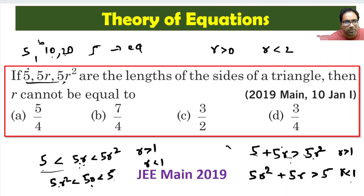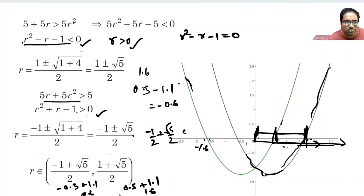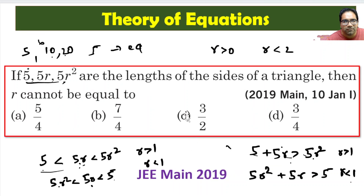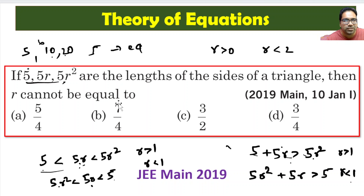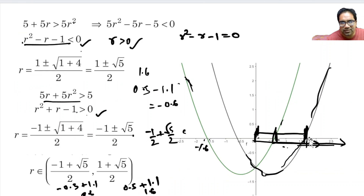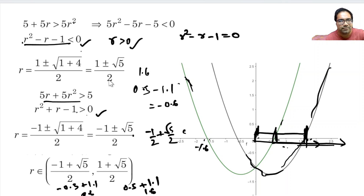Looking at the answer options: 5/4 = 1.25 is within the range, 7/4 = 1.75 is outside our range of 0.6 to 1.6, 3/2 = 1.5 is within the range, and 3/4 = 0.75 is also within the range. So r cannot be equal to 7/4. We can verify: substituting r = 7/4 will not satisfy the triangle inequality. That's the correct answer!